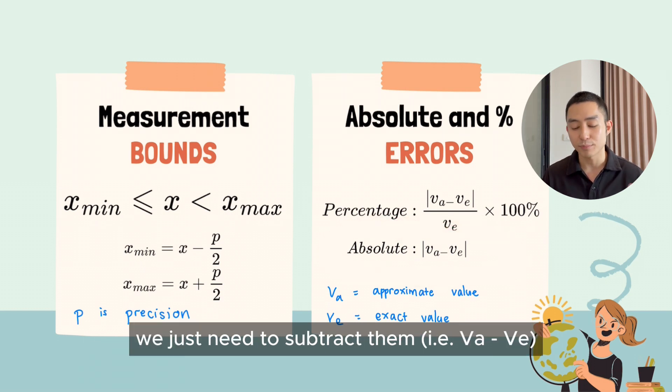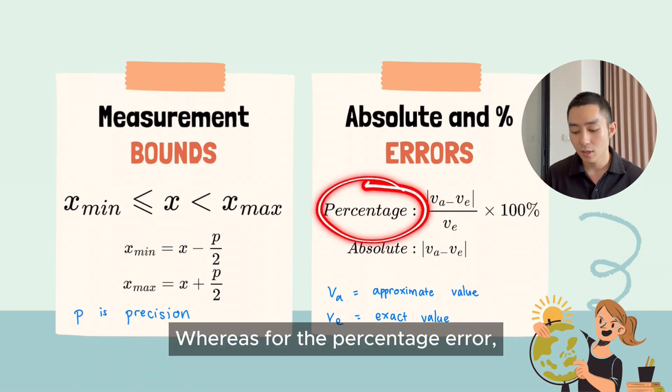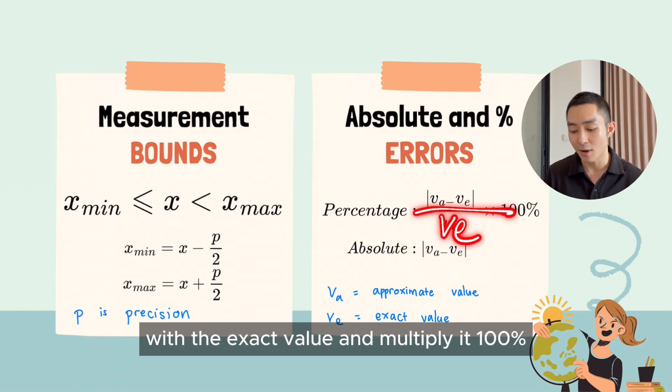we just need to subtract them in modulus, so it's always a positive value. Whereas for the percentage, we need to divide the absolute value with the exact value and multiply it by 100%.